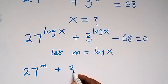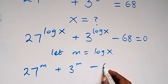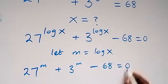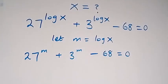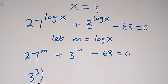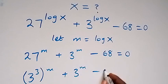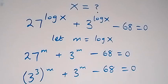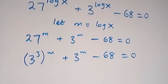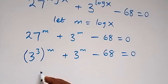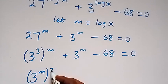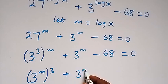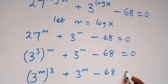Plus 3 raised to power m minus 68 equals 0. Then from here we can express 27 in base 3, that is 3 raised to power 3, then raised to power m, plus 3 raised to power m minus 68 equals 0. From here we can also interchange this power from the law of indices, and we have 3 raised to power m then raised to power 3 plus 3 raised to power m minus 68 equals 0.